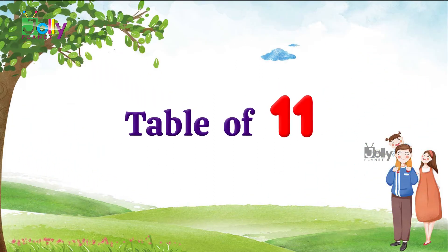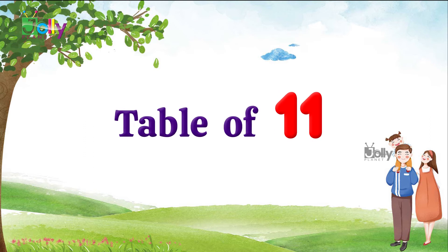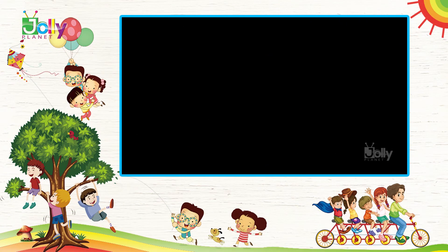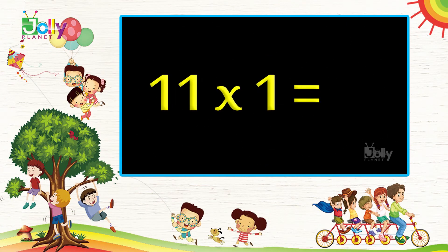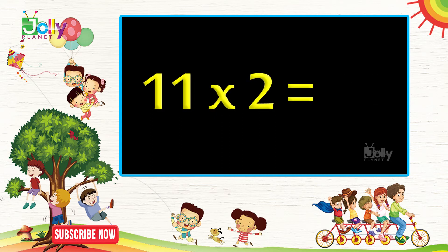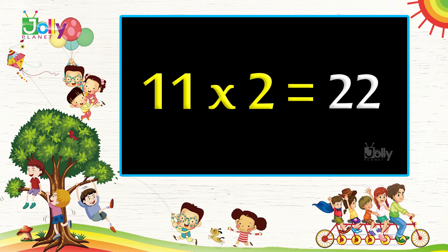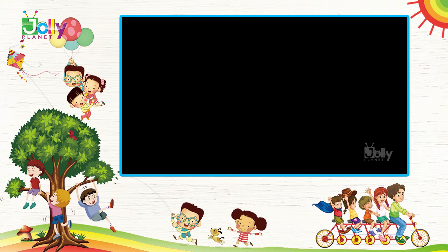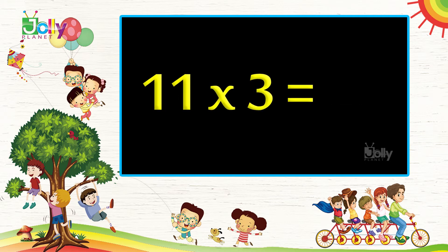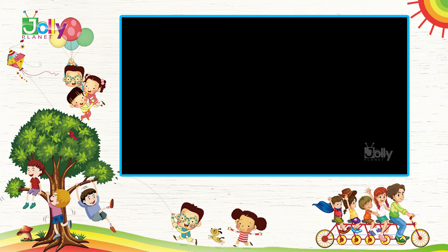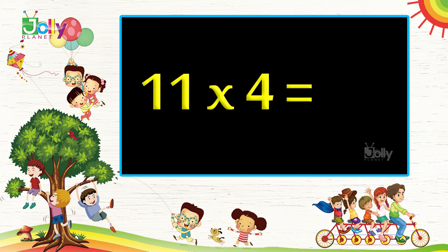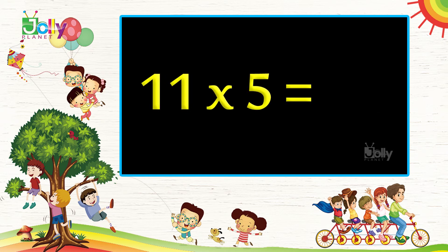Table of eleven. Eleven ones are eleven. Eleven twos are twenty-two. Eleven threes are thirty-three. Eleven fours are forty-four. Eleven fives are fifty-five.